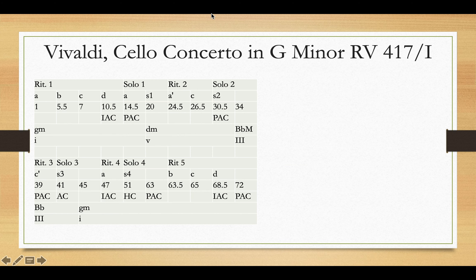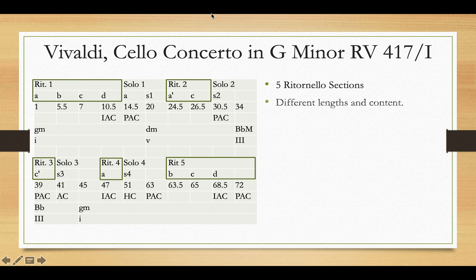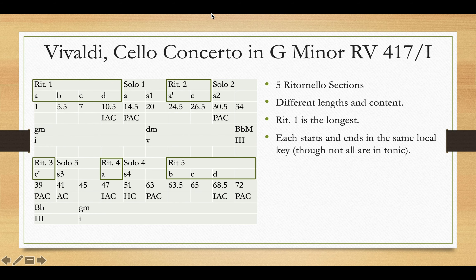Now let's put that opening ritornello into context. This slide shows a form diagram of the entire movement. There are five ritornello sections, each different in terms of length and content. The first ritornello is the only one that has all four ideas. Ritornello 2 pulls out ideas A and C; ritornello 3 has C; ritornello 4 has A; and ritornello 5 picks up B, C, and D. Each of these ritornellos starts and ends in the same local key — they do not modulate internally.